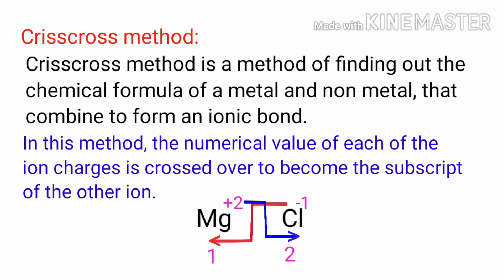In this method, the numerical value of each of the ion charges is crossed over to become the subscript of the other ion.